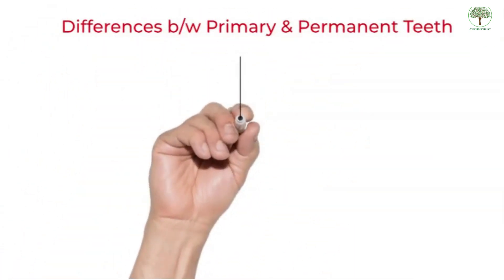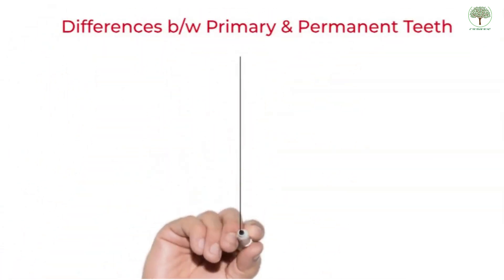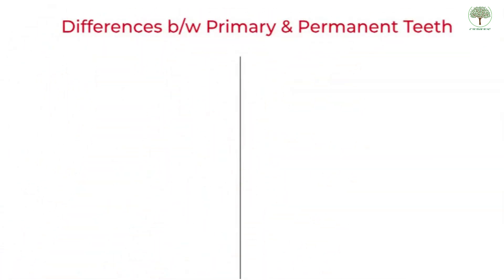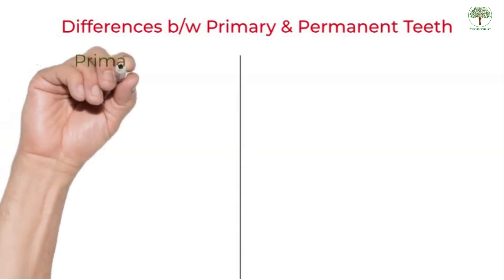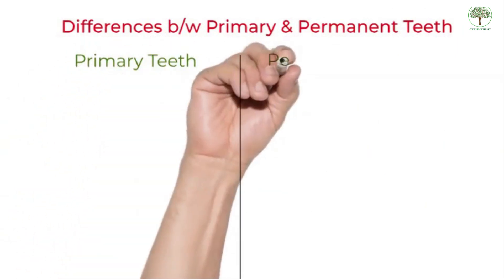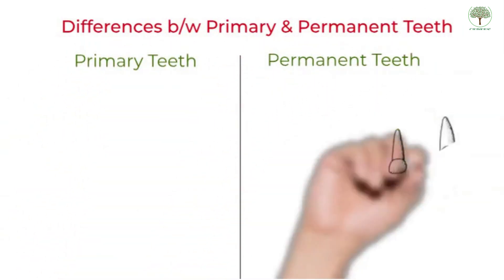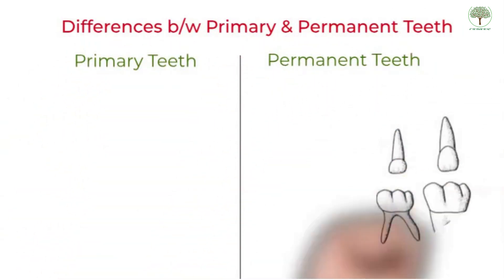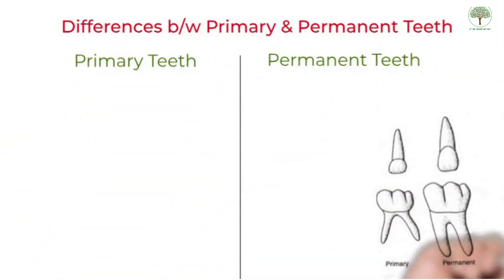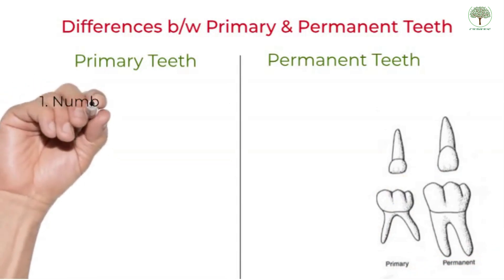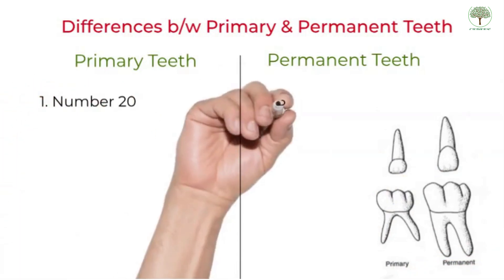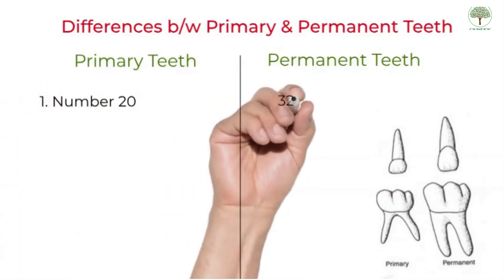The differences between primary and permanent dentition. Starting with general differences, while primary teeth are 20 in number, we have a set of 32 in the permanent dentition.